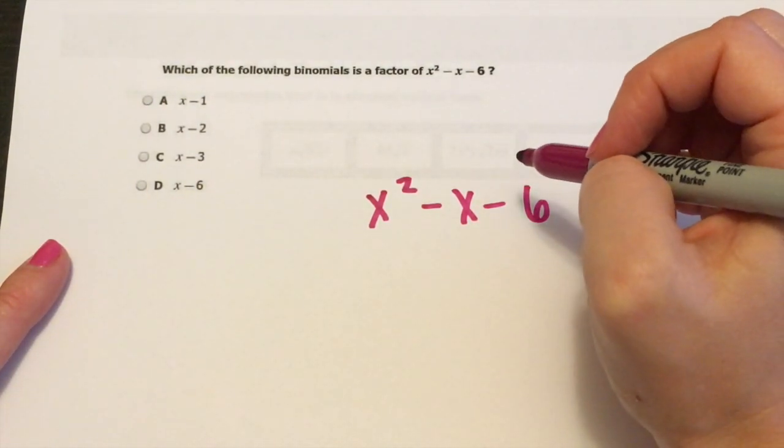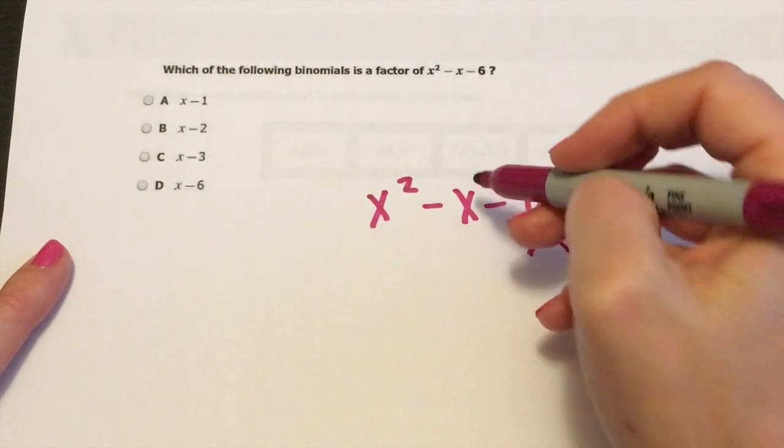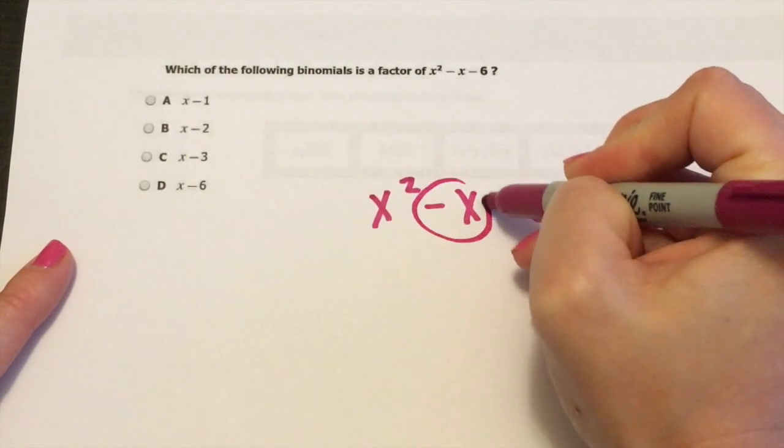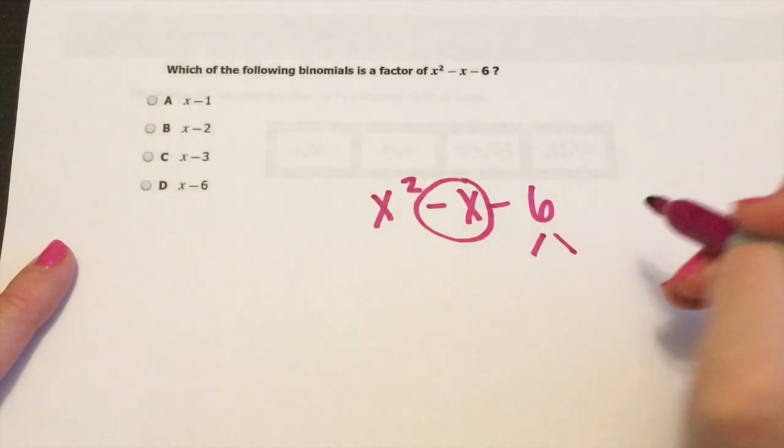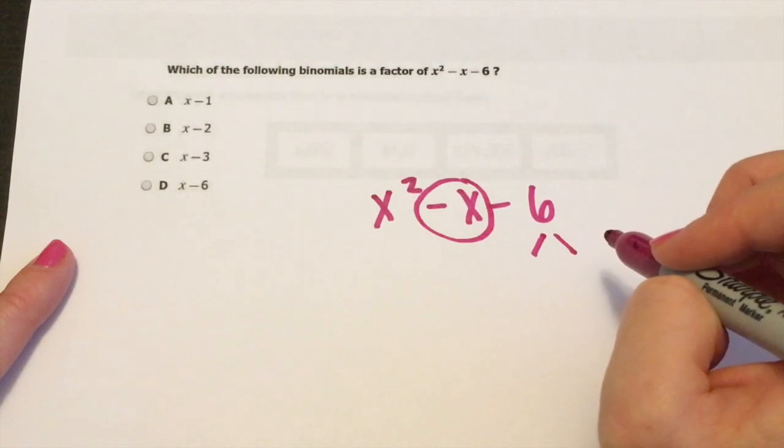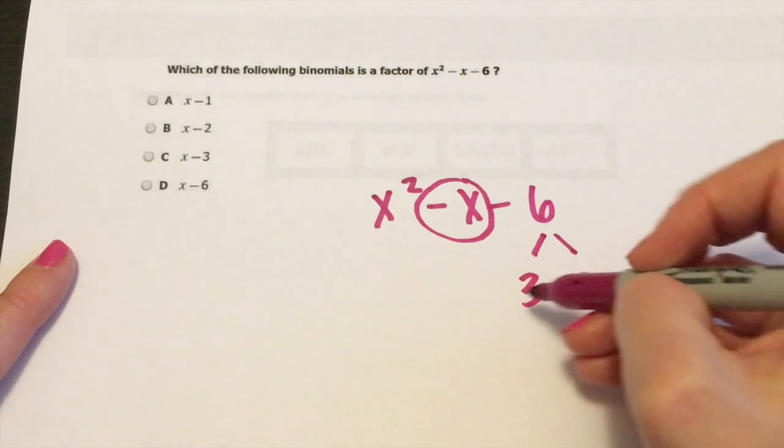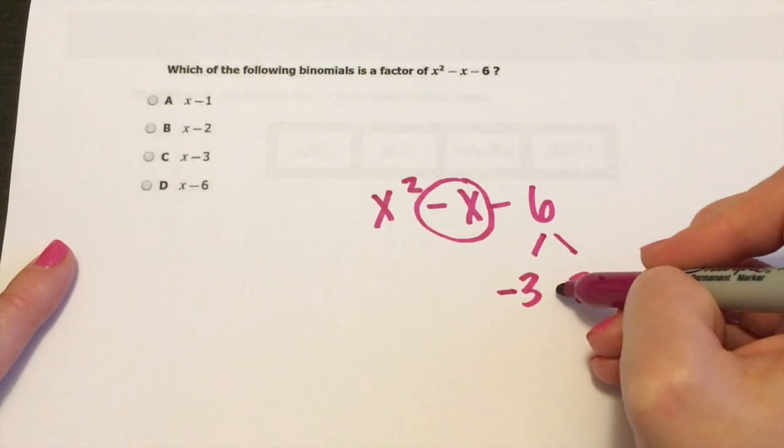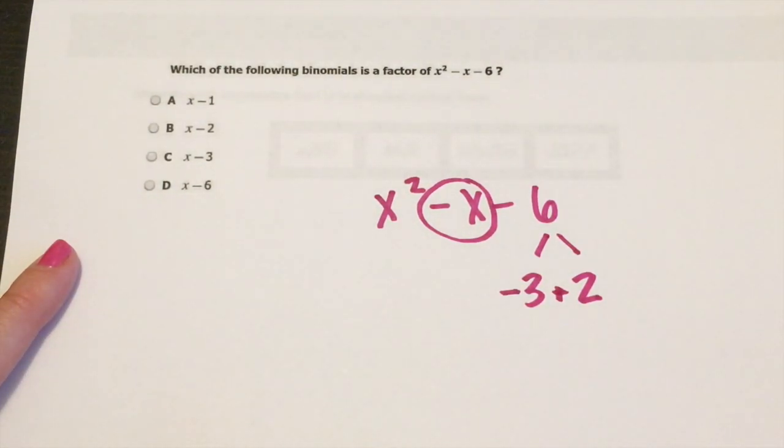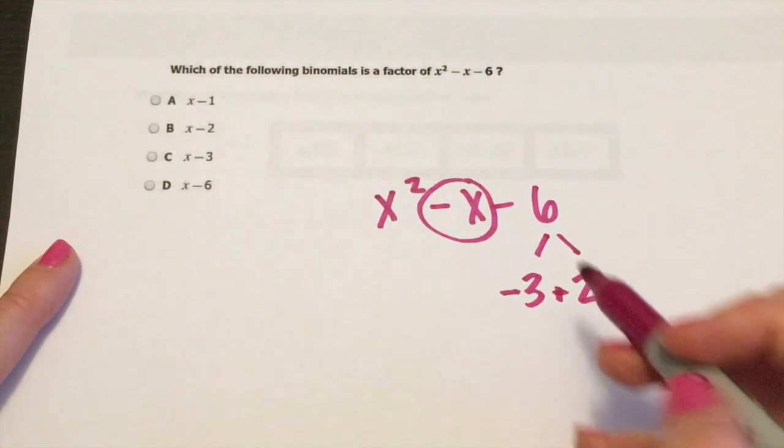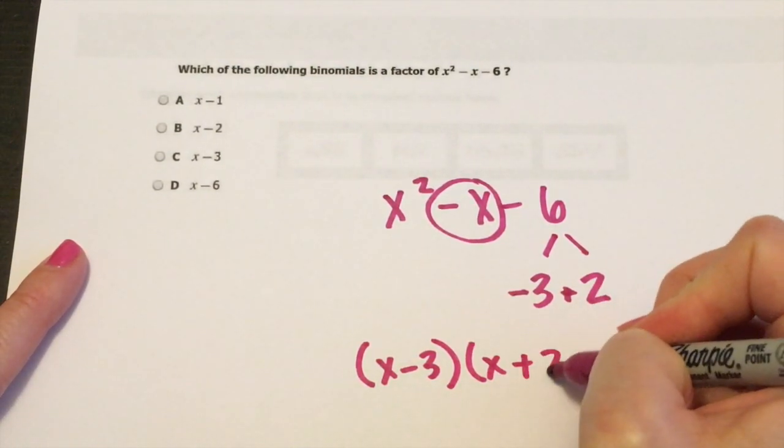So remember, when you're factoring, you want to have two numbers that multiply to six, but add to a negative one, because that's a negative. So my first thoughts are instantly three and two. Three times two is six. But negative three plus a positive two gives me a negative one. And so I'm going to just go ahead and write it out x minus three and x plus two.